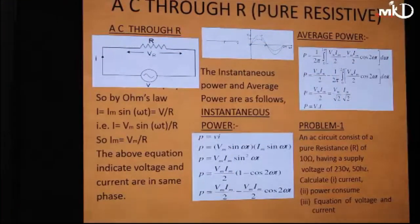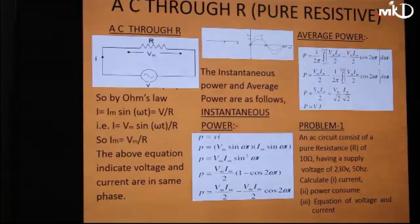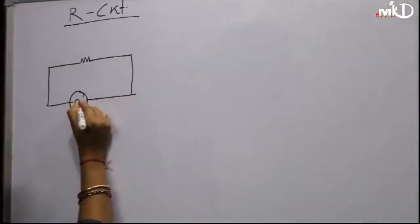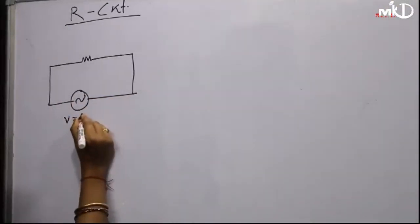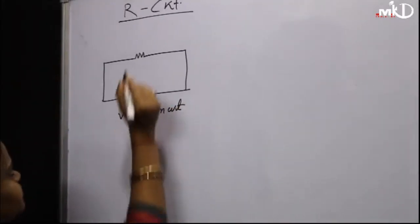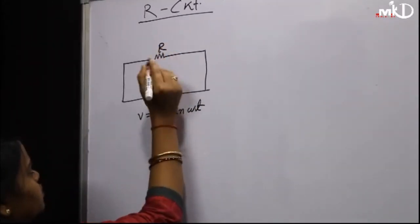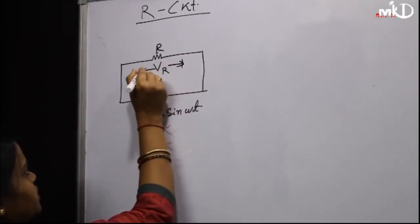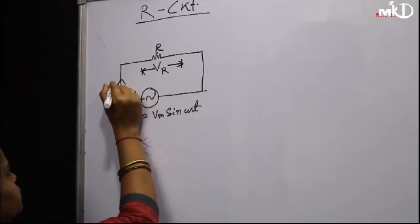Now we will start AC through a pure resistive circuit. Here this is the circuit — we have taken only one resistance. This is the AC source; the voltage is V = Vm sin(ωt). This is a resistive load and the voltage drop across it is Vr. The current flow of the circuit is I.